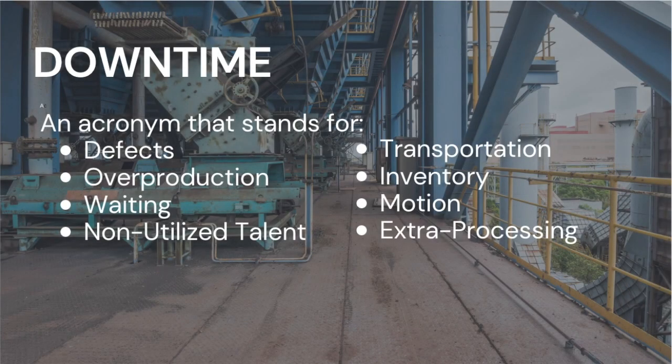The acronym DOWNTIME stands for: Defects, Overproduction, Waiting, Non-Utilized Talent, Transportation, Inventory, Motion, and Extra Processing. We're going to look at each of these elements individually in the upcoming slides.